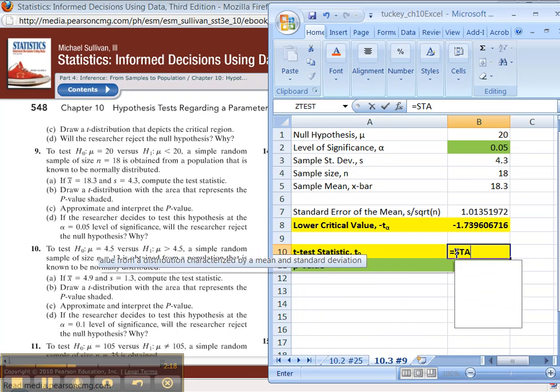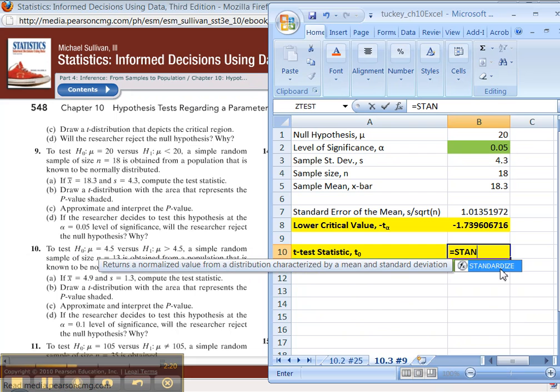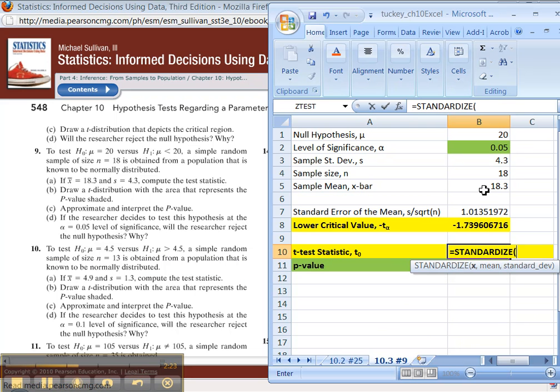Now this test statistic hasn't changed. It's still standardized. X bar, which is 18.3. Mu, which is the 20. Standard deviation is not standard deviation anymore. Use the standard error right here. Okay, so we're talking about a sample.